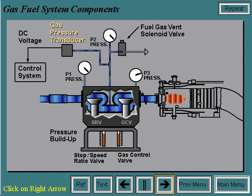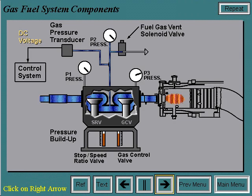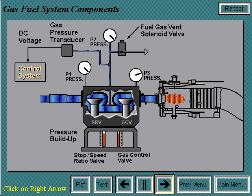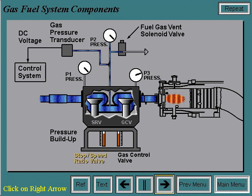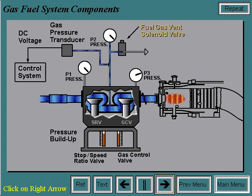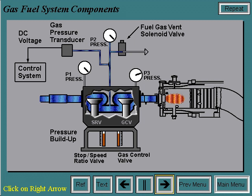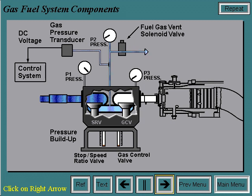The fuel gas pressure transducer has a DC voltage output directly proportional to pressure input in PSIG. This transducer provides the control system with a feedback signal for the operational fuel gas pressure, or P2 pressure, between the stop speed ratio and gas control valves. The fuel gas vent solenoid valve vents the volume between the stop speed ratio valves and gas control valve when the solenoid is de-energized. This valve is closed during operation. When it is open, it ensures that during the shutdown period, fuel gas pressure will not build up between the stop speed ratio valves and that no fuel gas will leak past the closed gas control valves.